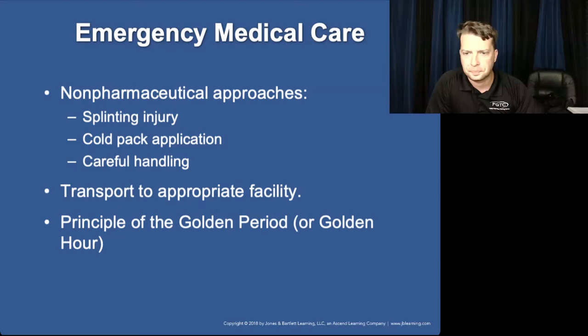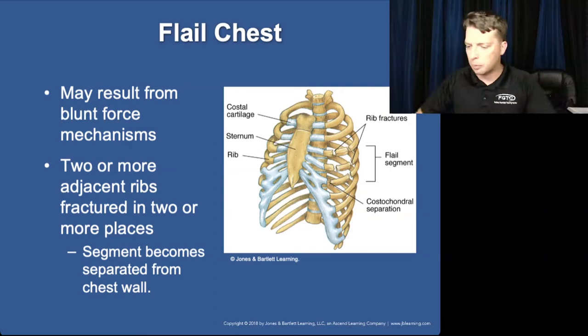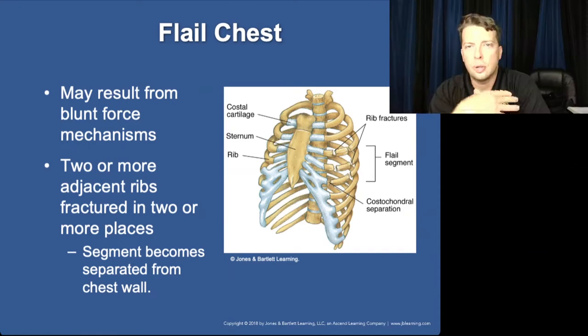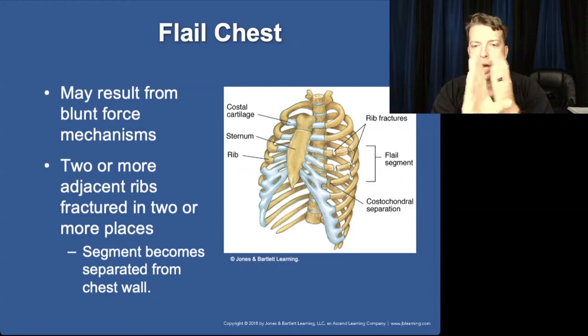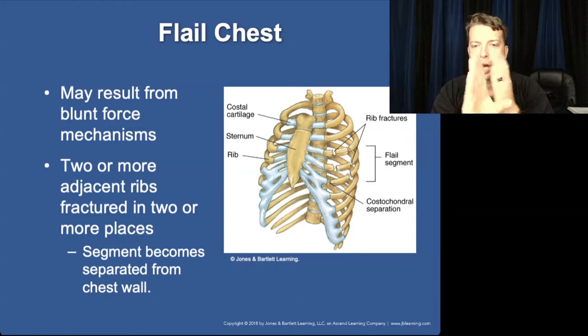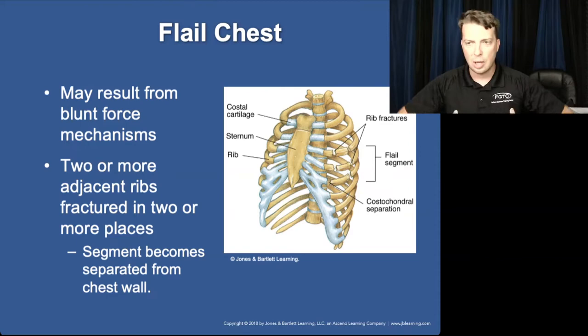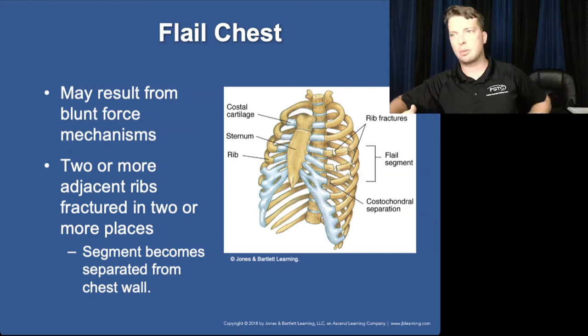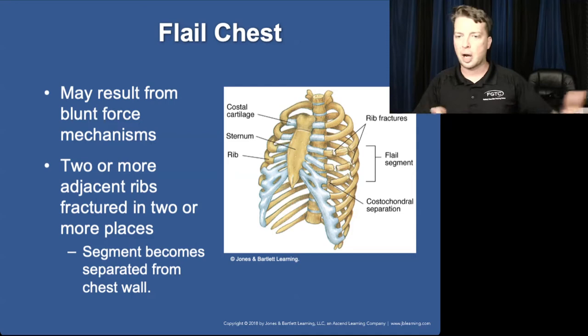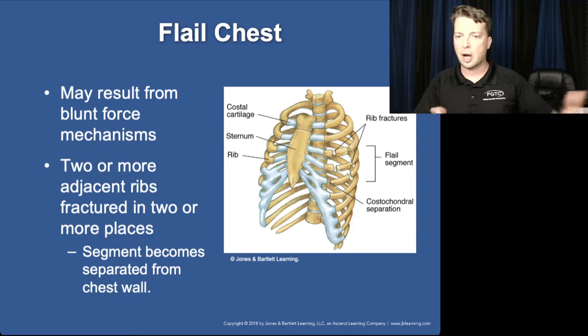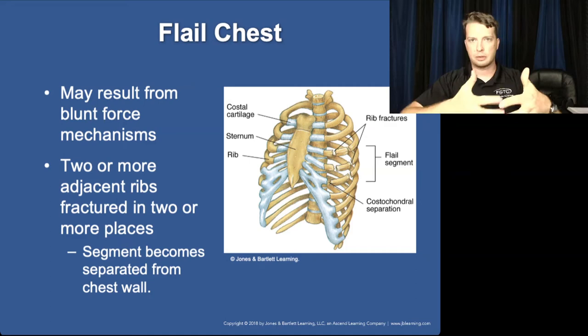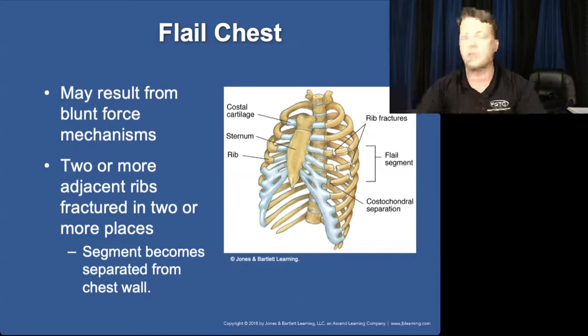A flail chest is defined as two or more ribs broken in two or more places, creating a free segment that moves opposite — paradoxically — to the rest of the chest wall. When the diaphragm contracts and the chest wall moves out, the flail segment moves in; when the chest wall moves in, the flail segment pops out. This is incredibly painful because each breath causes the broken rib ends to rub against each other.